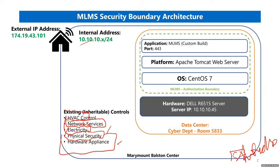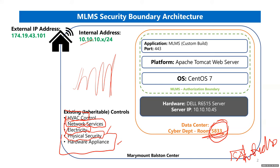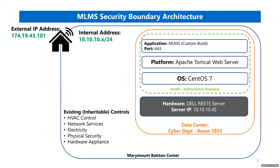Let's say there is a data center within the building — perhaps at the cyber department area, room 5833, next to the professor's office. When you go into that data center you see racks of devices, servers with many cables and indicator lights. Let's focus on one — a large hardware server, maybe a Dell R650.